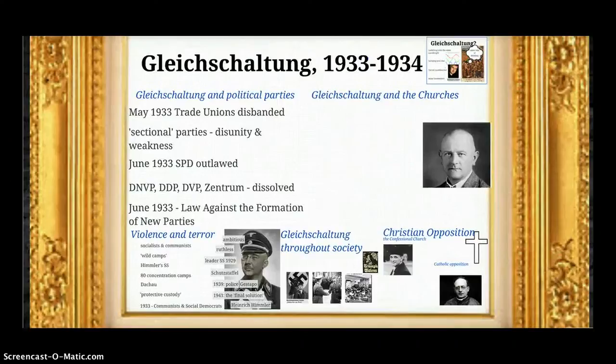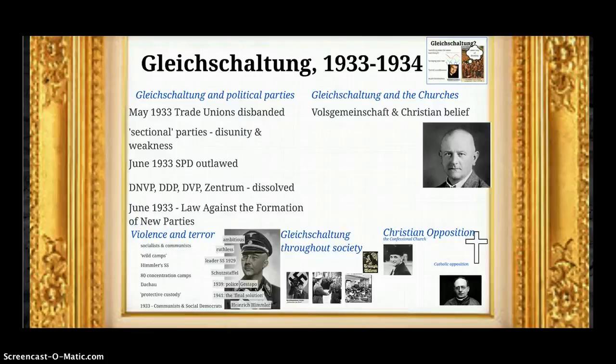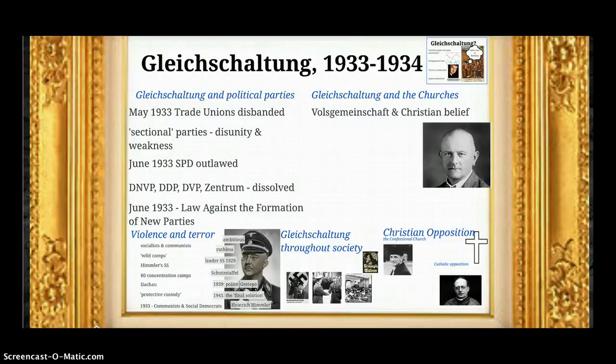Gleichschaltung and the churches: Volksgemeinschaft — this idea of a national community, people working together and putting the German state before themselves — was incompatible with Christian belief in terms of love, tolerance, and forgiveness. However, Hitler and the Nazi regime realised they couldn't attack the churches wholesale. Far too many Germans were Christian, and it would have created too much opposition within Germany. But they did try to bring the churches into line.